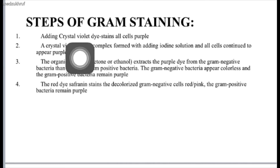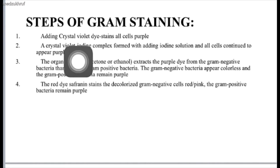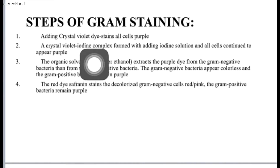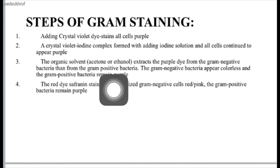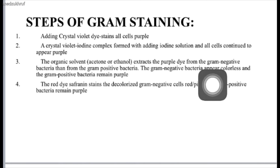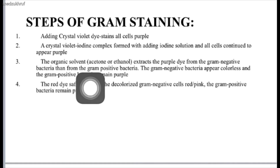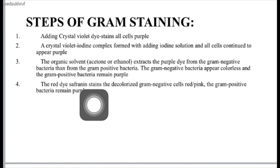There are four basic steps of Gram staining. First, we add a crystal violet dye to the cells present on a slide — the cells color purple. After that, we add iodine, which forms a crystal violet-iodine complex, but the cells are still purple. Then, after rinsing the slide, we add an organic solvent — acetone, ethanol, or alcohol — to decolorize the gram negative cells by extracting the purple dye from their cell walls. Gram negative bacteria appear colorless while gram positive remain purple.